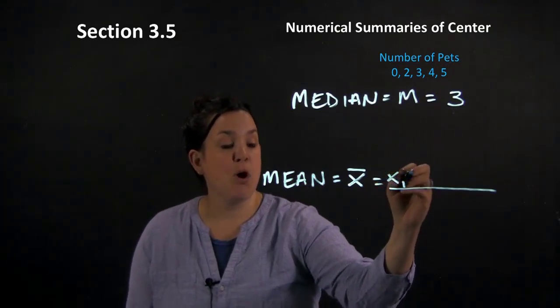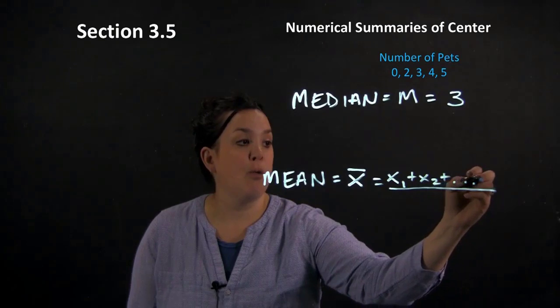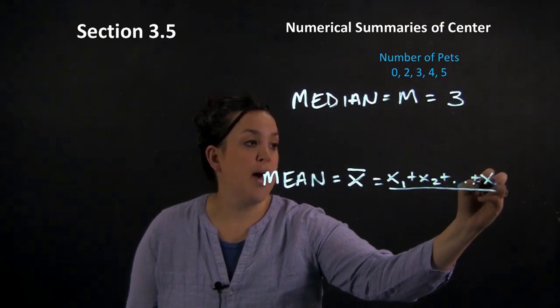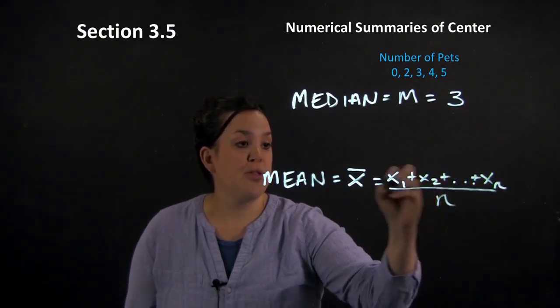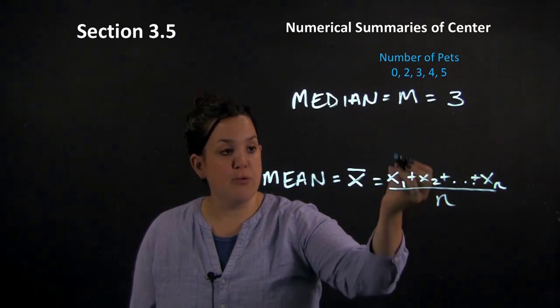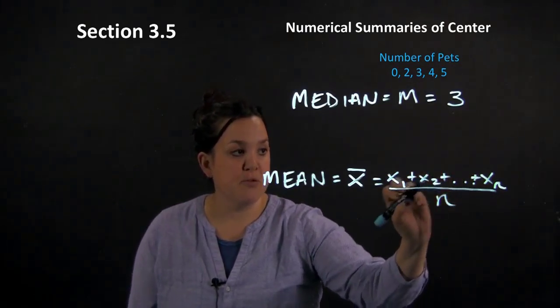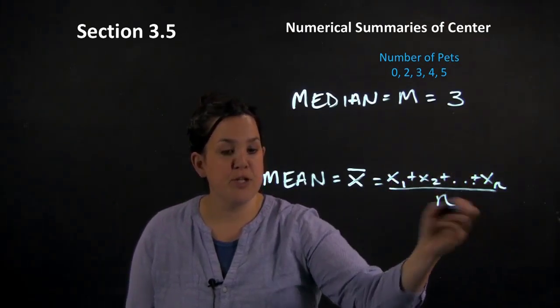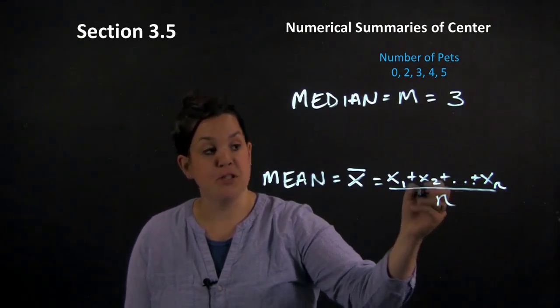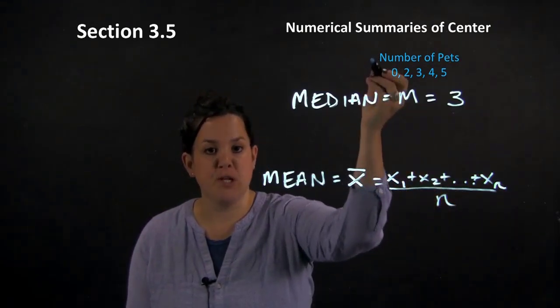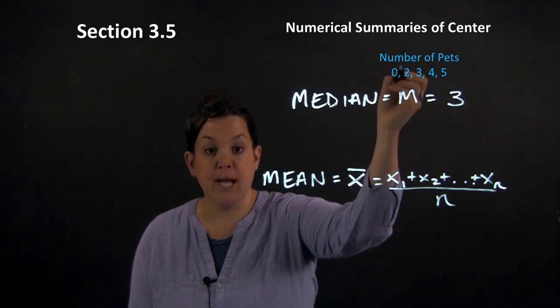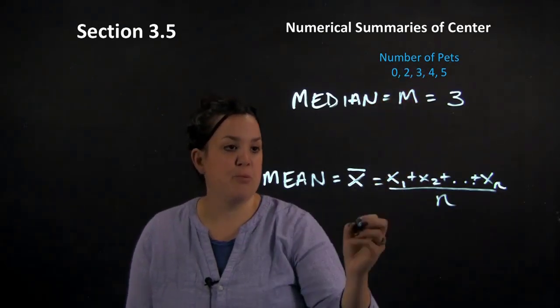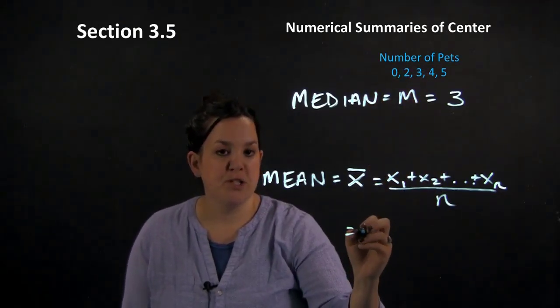So X sub 1 plus X sub 2, and you do it all the way out to X sub n. So this simply means that you do it for the first observation, the second observation, all the way to the last observation, where n is the total number of observations. So X sub 1 here would just be 0. X sub 2 is the second location in the data set, so it would be 2. So it just means the location.